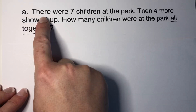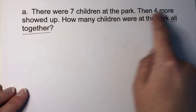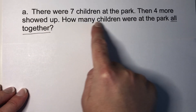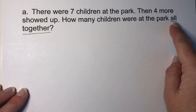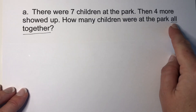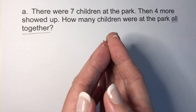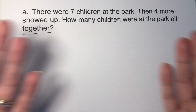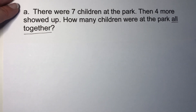I'm going to read you the word problem. It says, there were seven children at the park. Then four more showed up. How many children were at the park all together? Now, why do you think I have the words 'all together' underlined? I have those words underlined because a lot of times when we see 'all together' in a word problem, that means we have to put two numbers together. And when we put two numbers together, that is called adding. And we show adding with a plus sign, just like that.